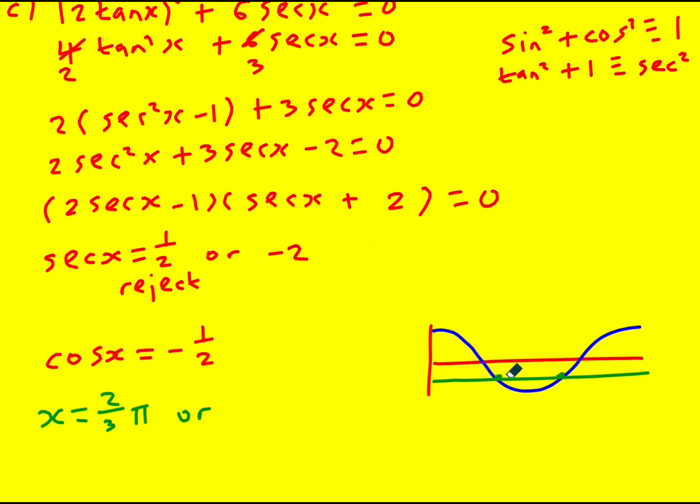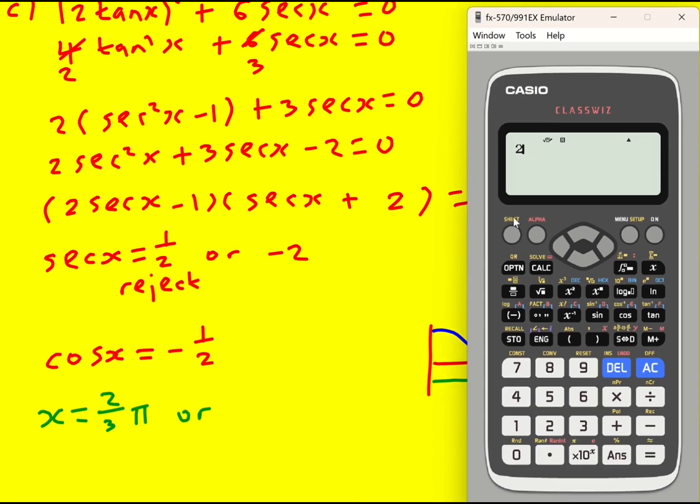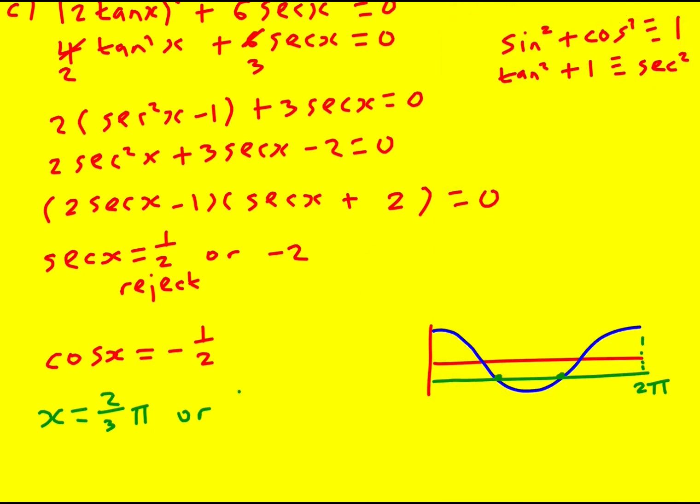So 2π/3 is one of them. And the other one, you find by using the symmetry of the curve, or you might use CAST diagrams, however you want to do it, but it's going to be 2π minus 2π/3 to get the other one. Which gives 4π/3.